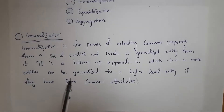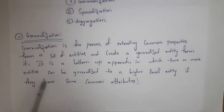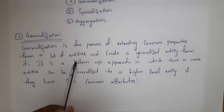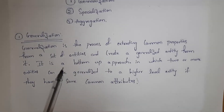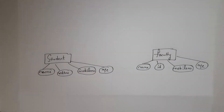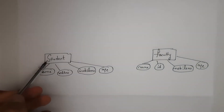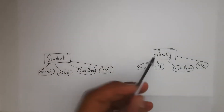First, I will explain what generalization is. Before the definition, I will give an example so that you can clearly understand. For example, there are two entities: one is the student entity and the next one is the faculty entity.